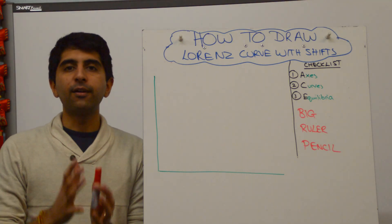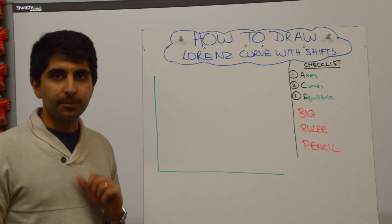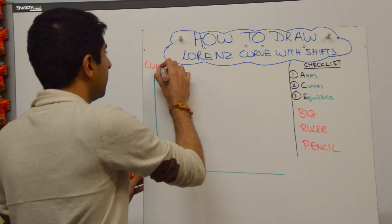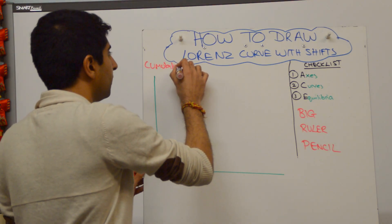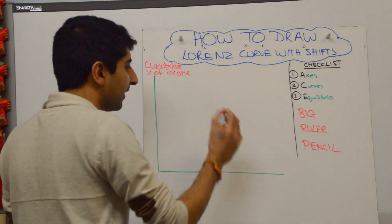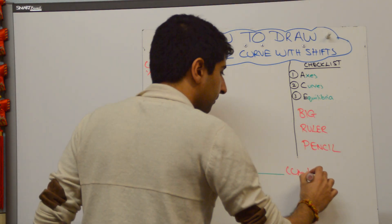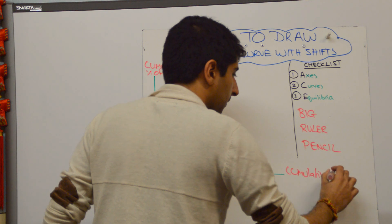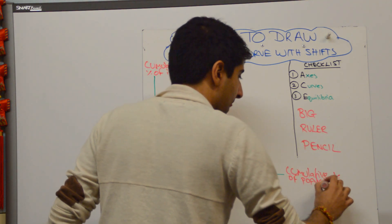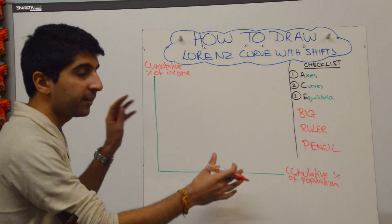Well, the most important thing to get right at the start is to label the axis correctly. The y-axis must be labeled cumulative percent of income, and the x-axis must be labeled cumulative percent of population. That's a really important start. Cumulative just means up to and including — you must label it that way.